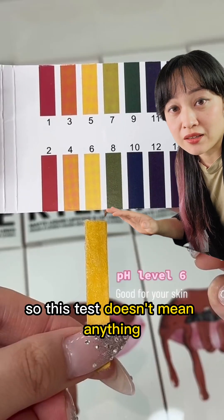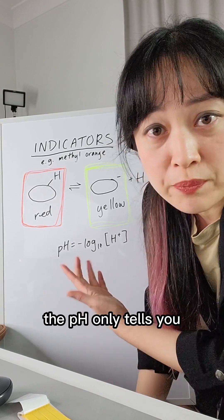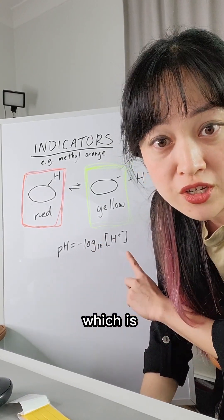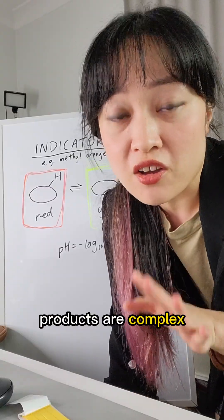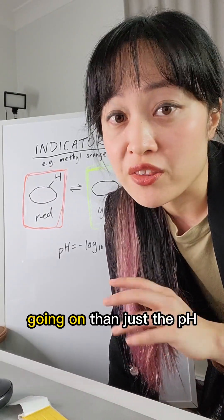And even with products with water, the pH only tells you one tiny aspect of the product, which is the hydrogen concentration. Products are complex. There's usually way more going on than just the pH.